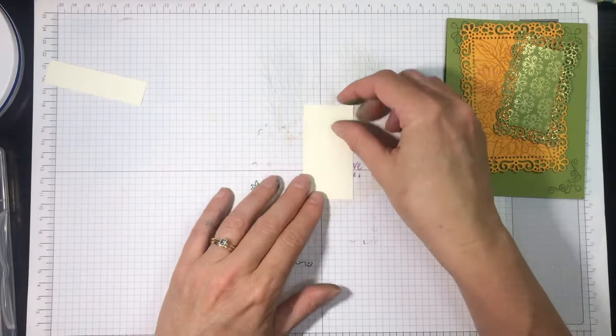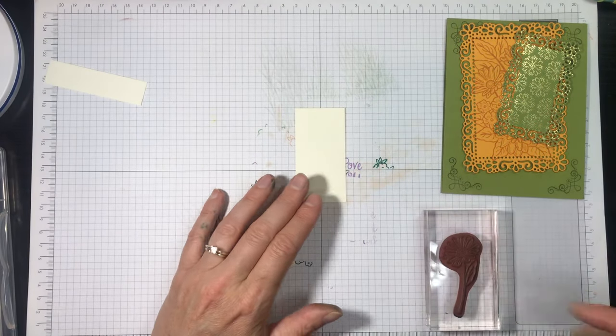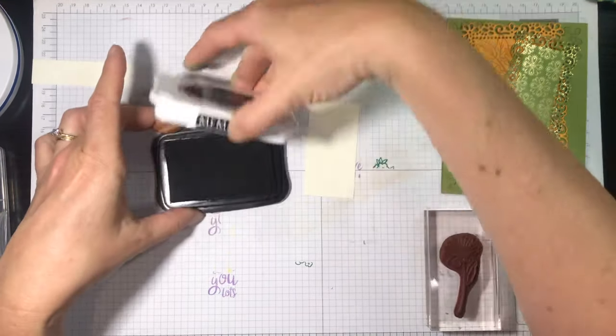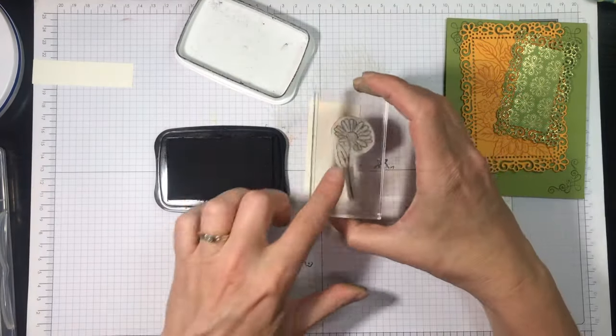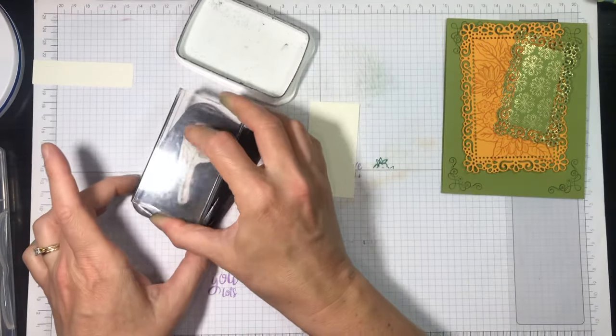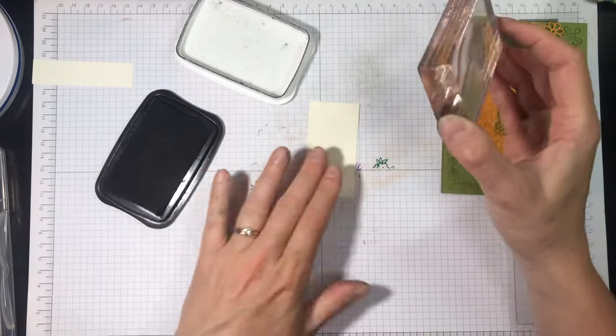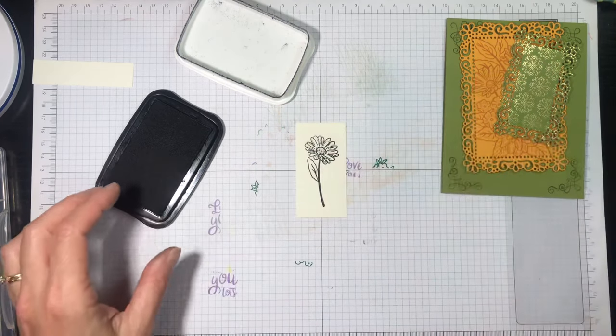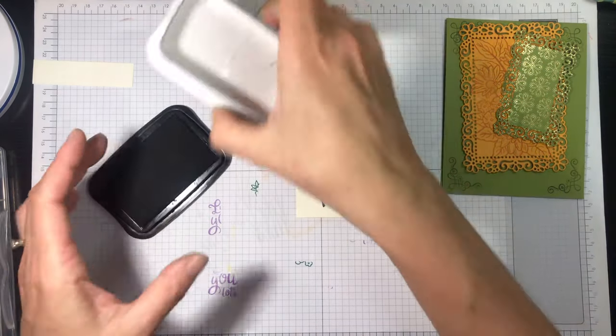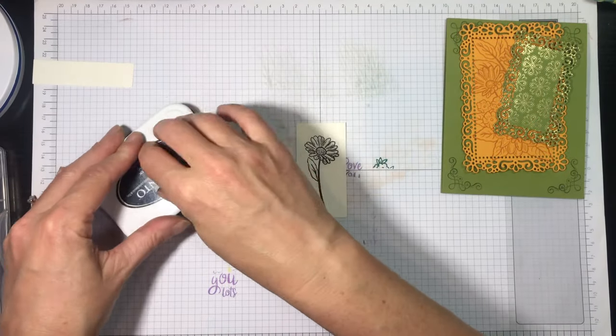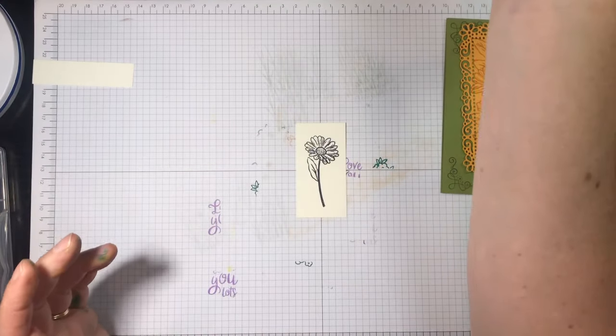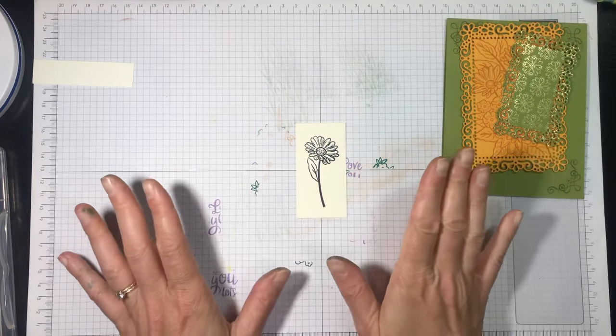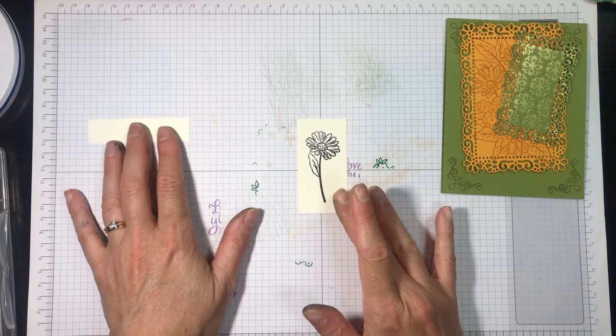We're still working and I've got a piece of Very Vanilla cardstock here and we're gonna use the Memento Tuxedo Black ink pad to stamp this Daisy from Ornate Style on that Very Vanilla scrap. And the reason that I'm going to use Memento Tuxedo Black ink is because I want to color this with my Stampin' Blends. And when coloring with Stampin' Blends which are alcohol ink markers I don't want my image to bleed. So for that reason I'm using Memento ink. It won't bleed when used with the alcohol ink markers.